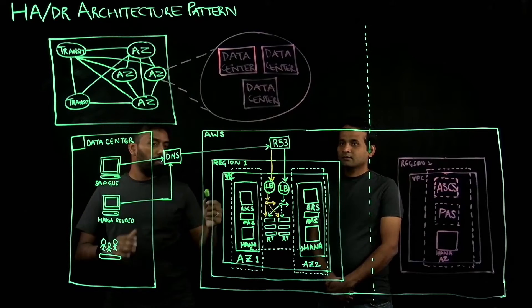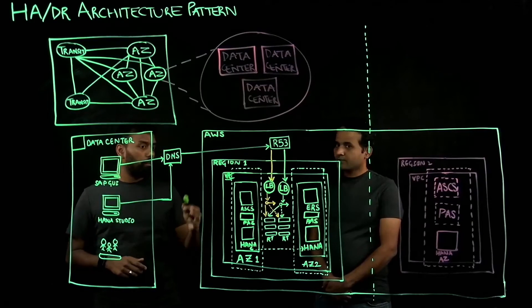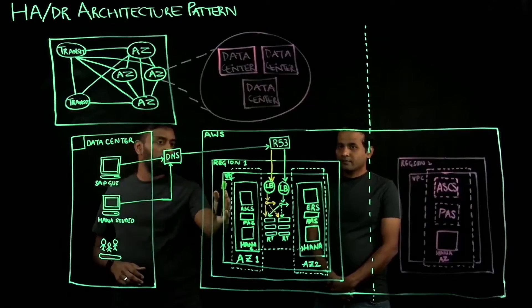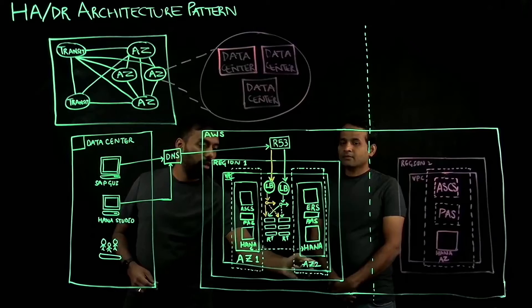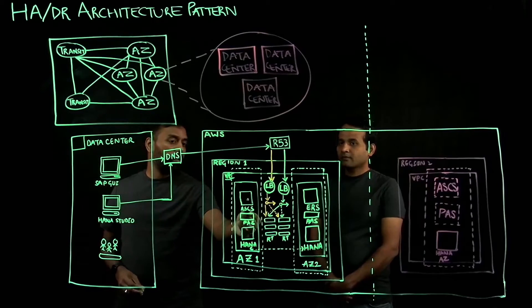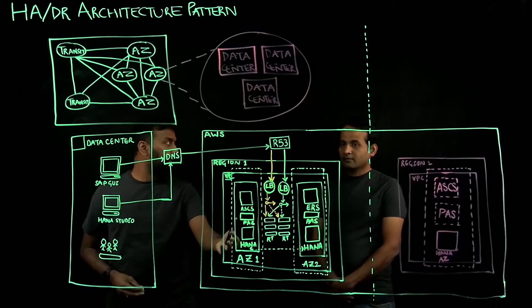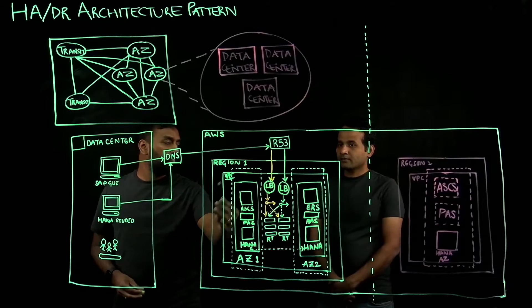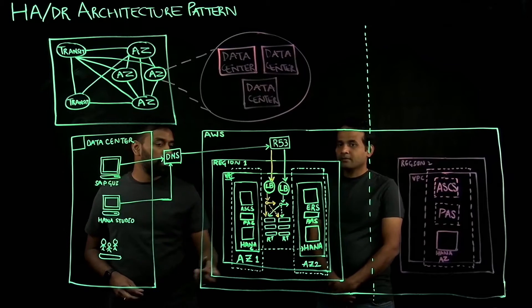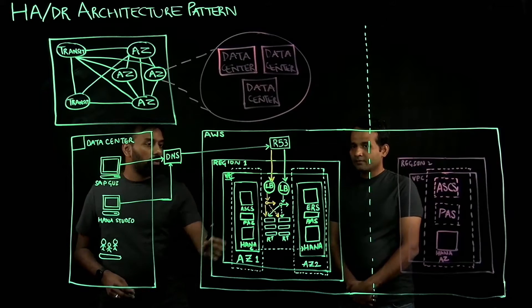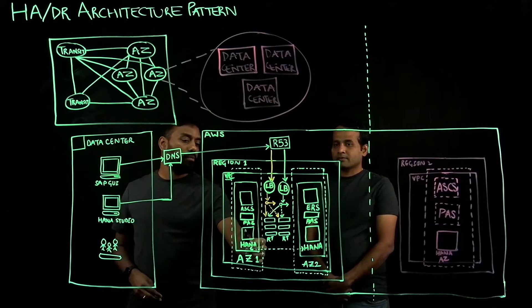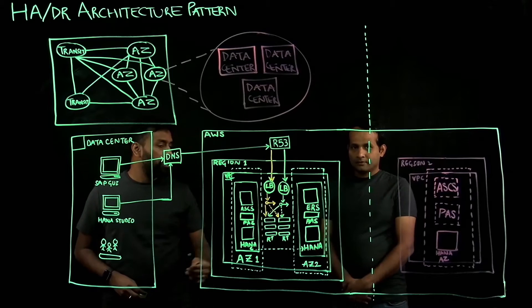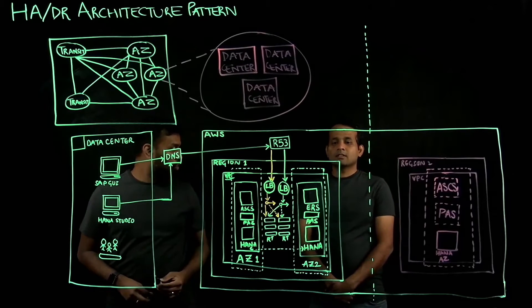The way we're protecting the single points of failure is by leveraging multiple availability zones. If you see, I have AZ1 and AZ2. I have the primary applications—your ASCS, your central services instance, and your primary HANA database—running on AZ1. And I have replication setup from HANA database to your secondary availability zone.